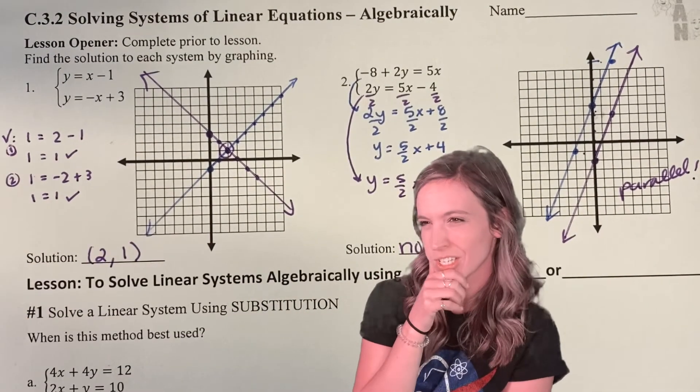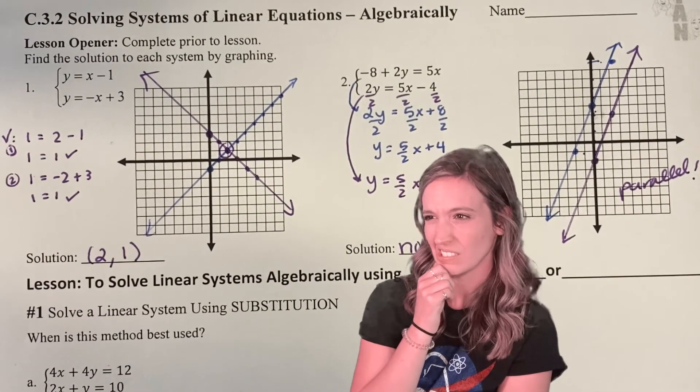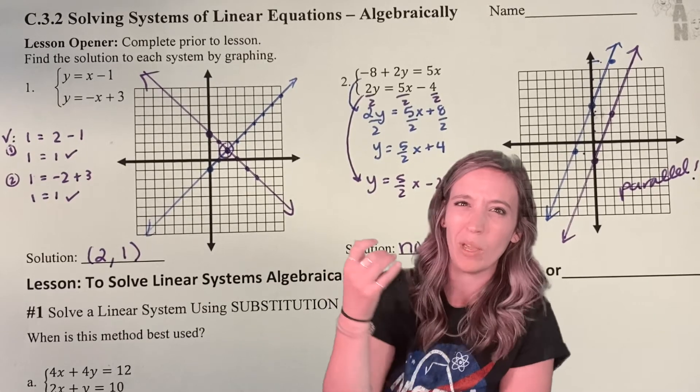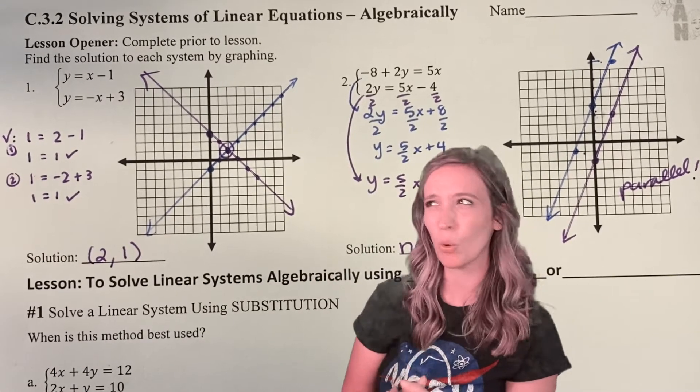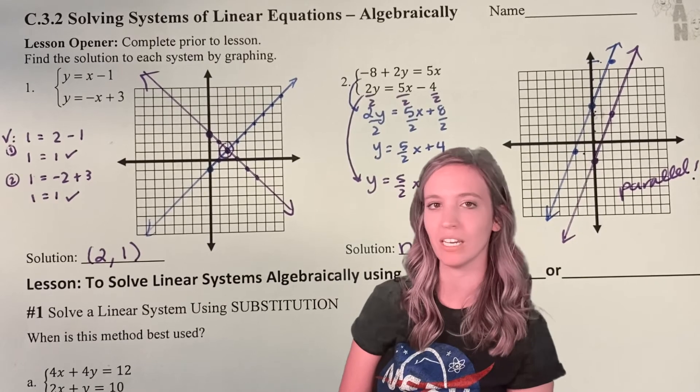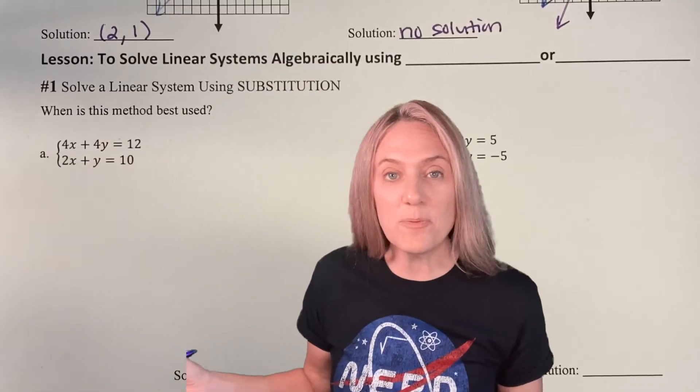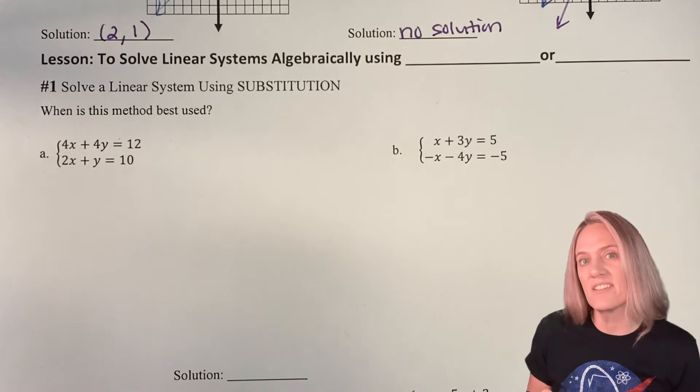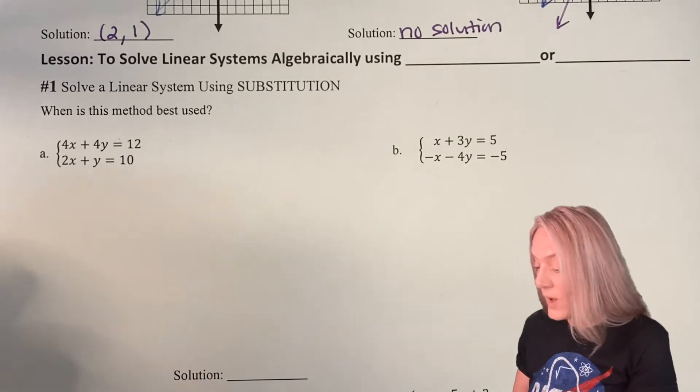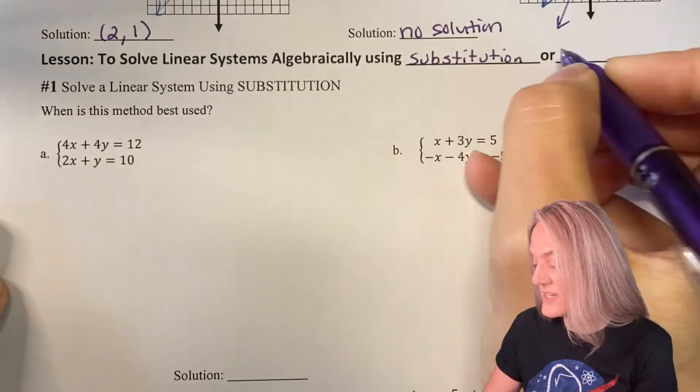Now, what are the limitations to solving systems by graphing? We're only human. We can only graph so precisely. So what are some other ways we could solve systems without needing to graph? Let's solve algebraically. We have two methods to solve linear systems: substitution and elimination.